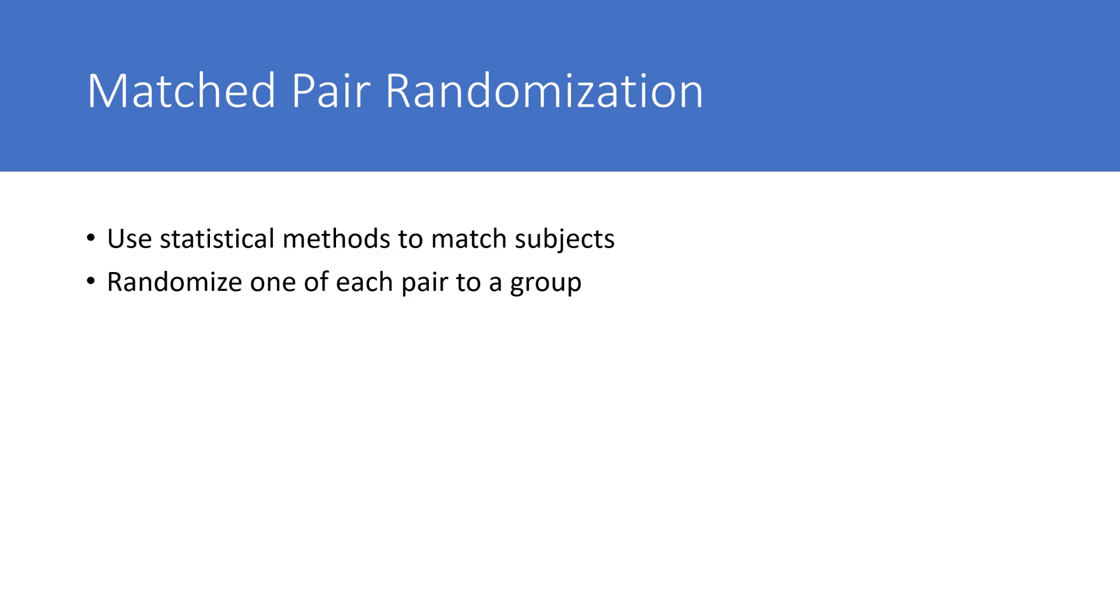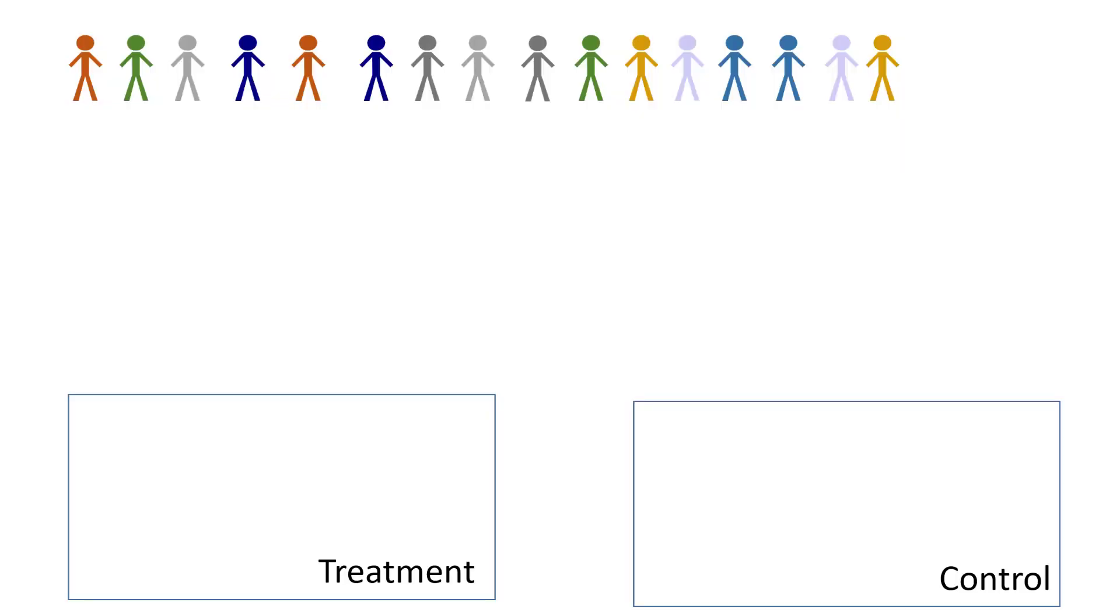There's a variety of methods to pair the participants, but I'll just show you basically how it would look. In this, we look for the participants that are the closest match to each other, and then we randomly allocate them to each group.